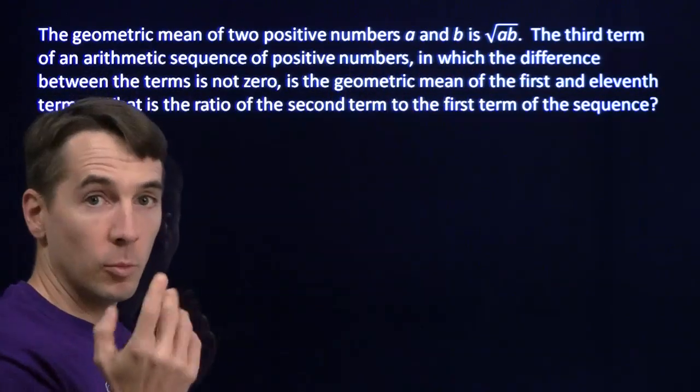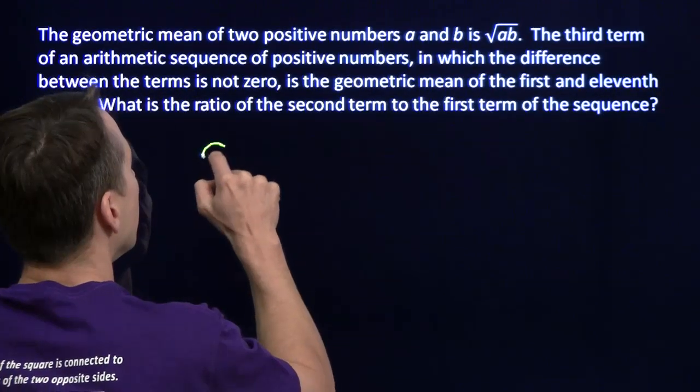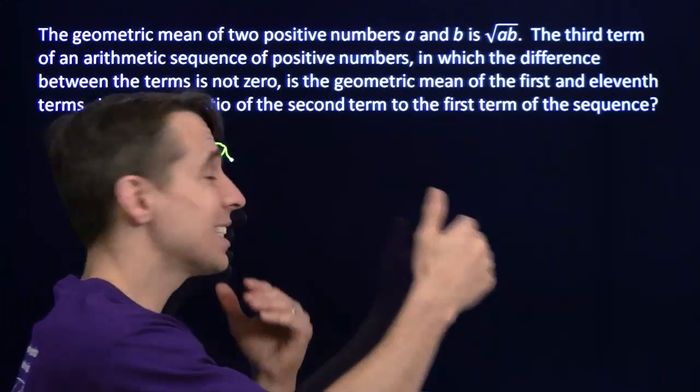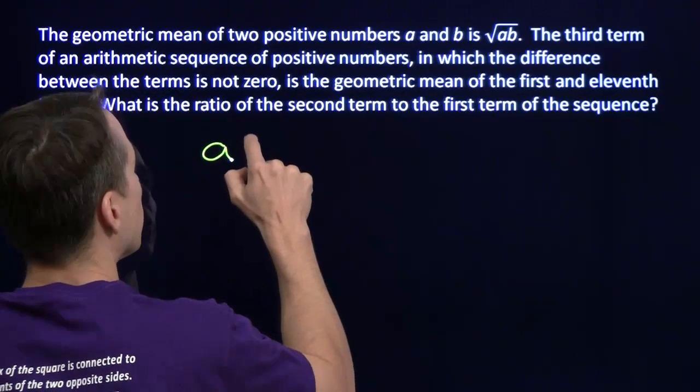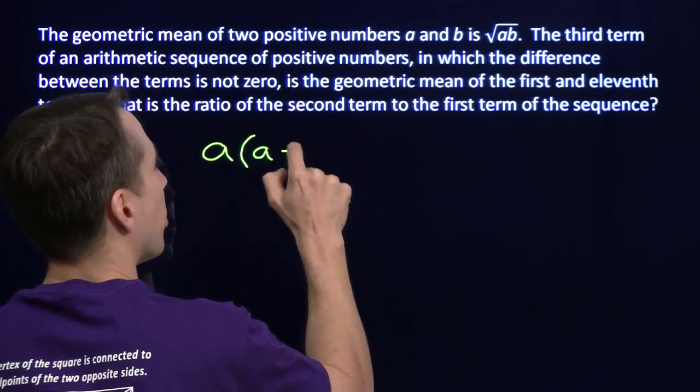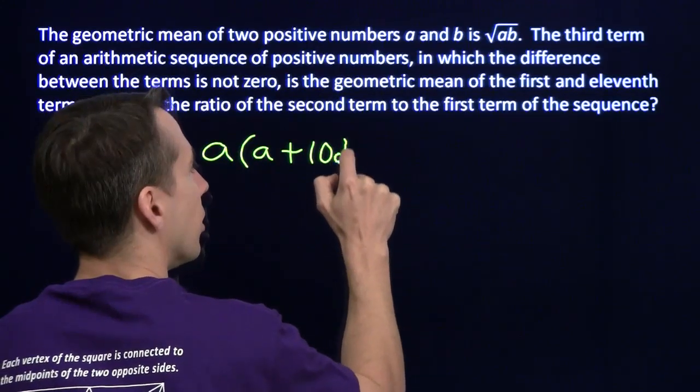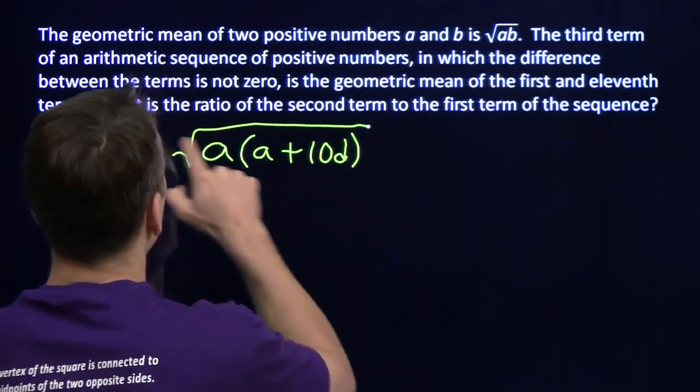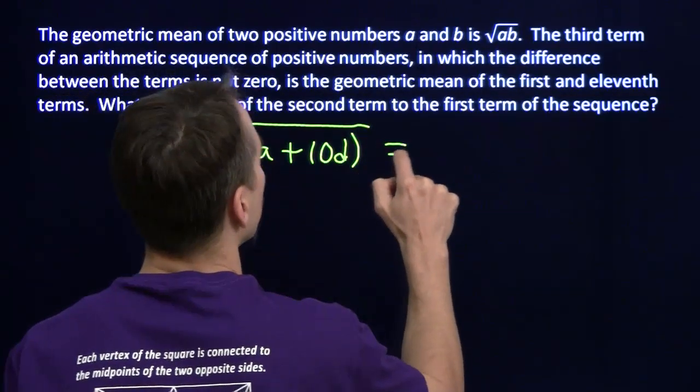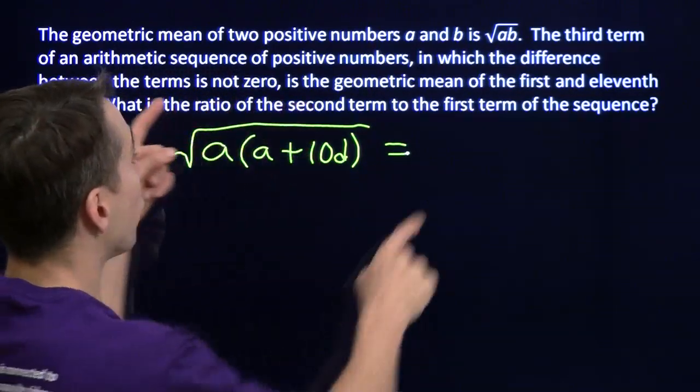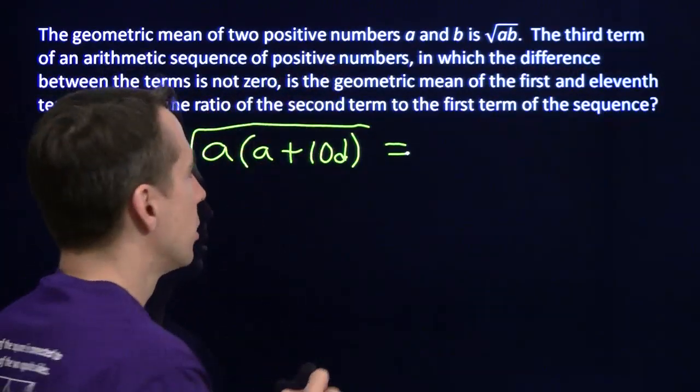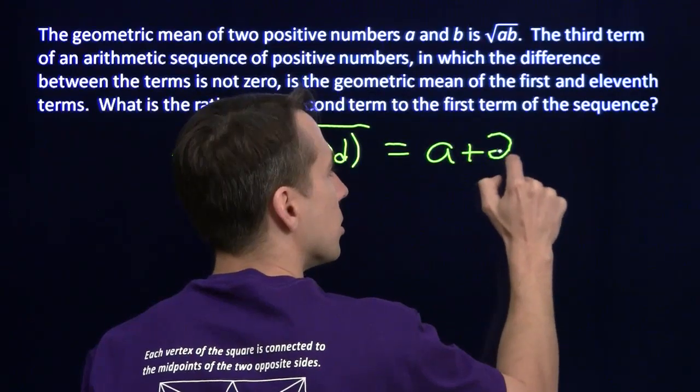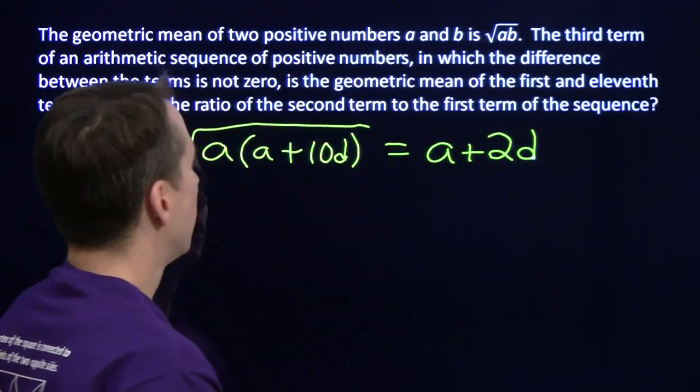All right, so the first term, we're going to call that A. And the eleventh term is, you start at the first term, and you take ten steps. And the geometric mean, then, is going to be, I take the product of the first term and the eleventh term, and I take the square root. And I know that that equals the third term of the arithmetic sequence, which is, you start at the first term and you take two steps.